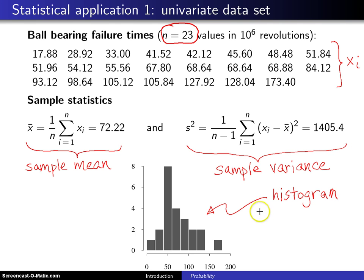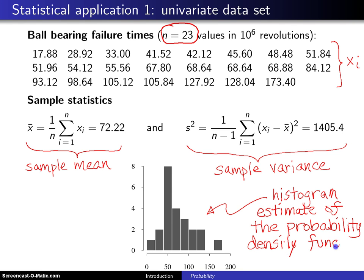A histogram you can think of as an estimate, a graphical estimate, of what is known as in this case the probability density function for the random variable of interest, which in this case is the failure time for the ball bearings. And the reason it's a probability density function is the ball bearings are continuous random variables.